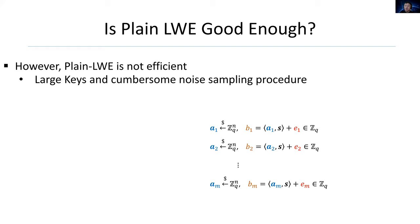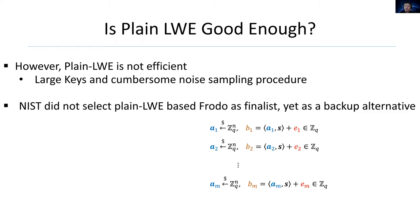Plain LWE means LWE in the form as we defined before. And actually, this is not good enough because of efficiency. Usually plain LWE suffers large key sizes, and the Gaussian sampling involved in choosing noise is cumbersome. NIST also did not select plain LWE-based Frodo as final list, yet as a backup alternative.